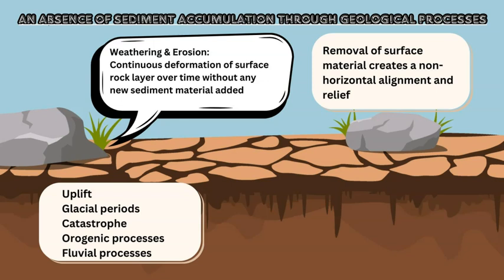The unconformity could last thousands or millions of years. Once a change occurs whereby deposition is reinstated in that area — most likely through a body of water on the surface — new sediment accumulation begins and that unconformity becomes buried between rock layers of different ages. When you dig through the ground and identify these unconformities, you can figure out how long that unconformity lasted based on the relative ages of the rock layers immediately above and below, usually calculated using fossil records and index fossils.